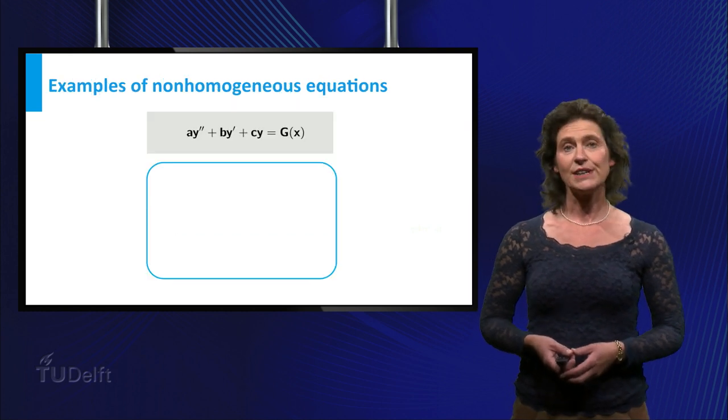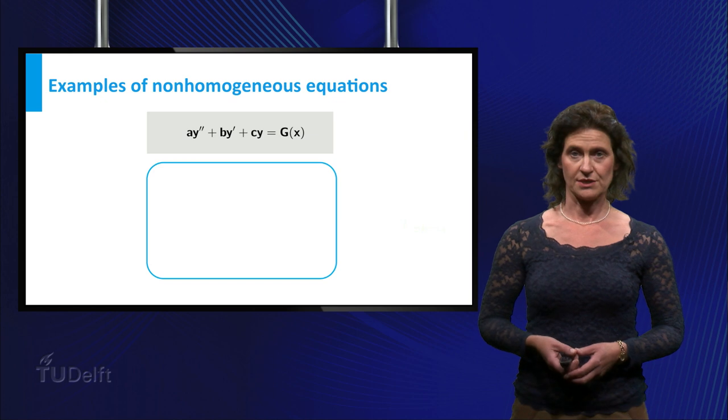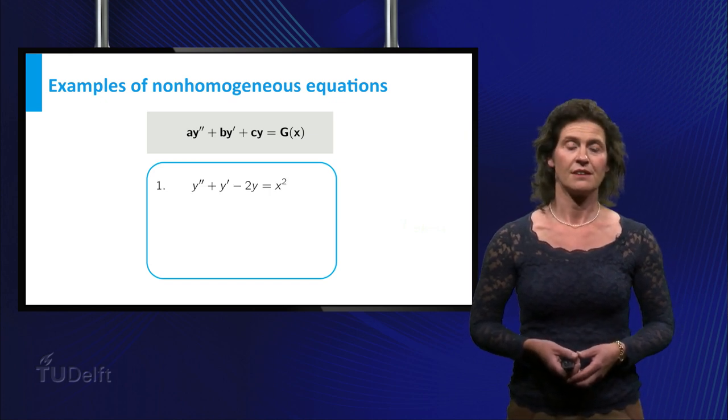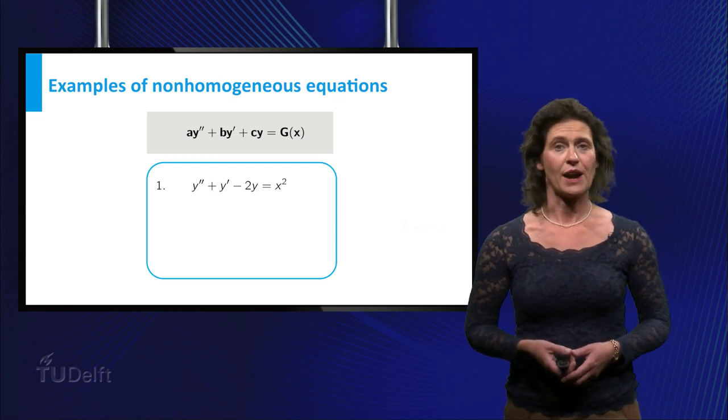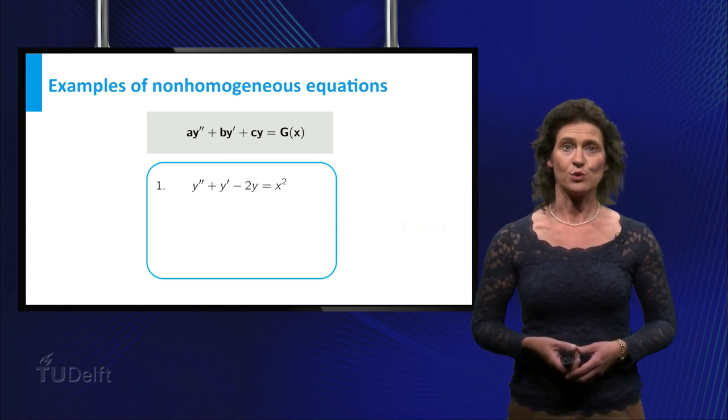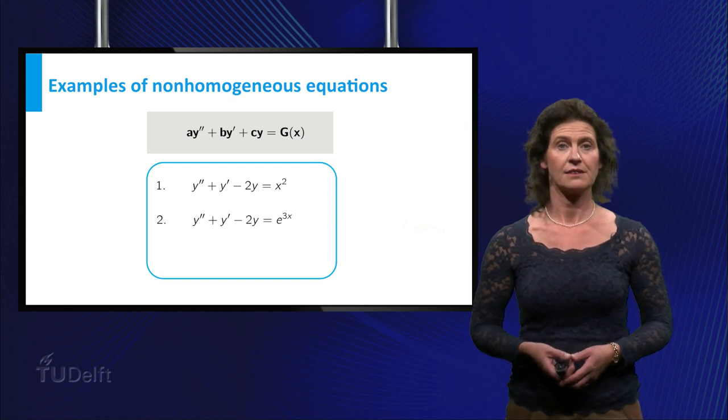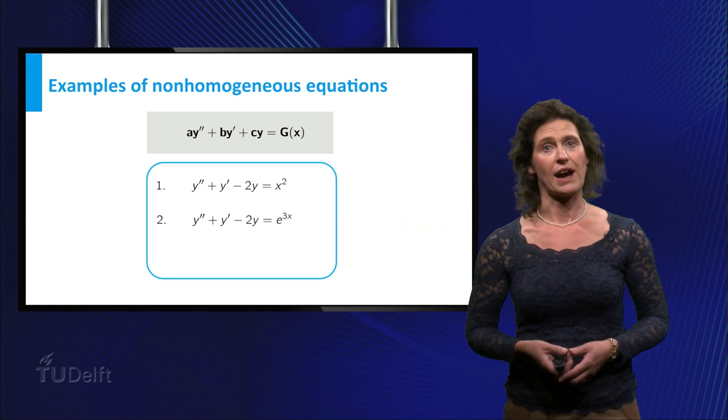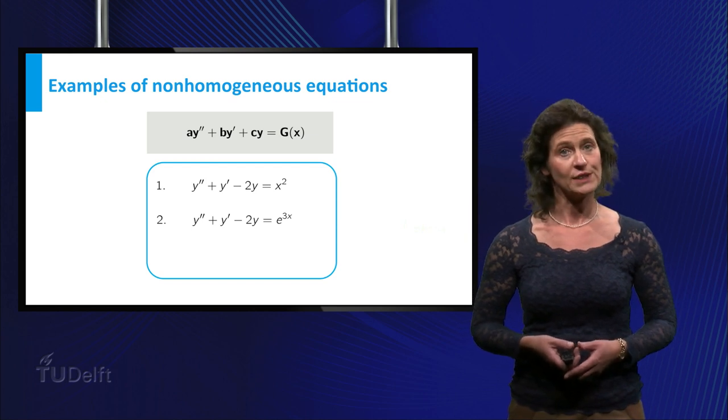Here you see three non-homogeneous equations with various expressions for g. y double prime plus y prime minus 2y equals x squared. y double prime plus y prime minus 2 times y equals e to the power 3 times x.